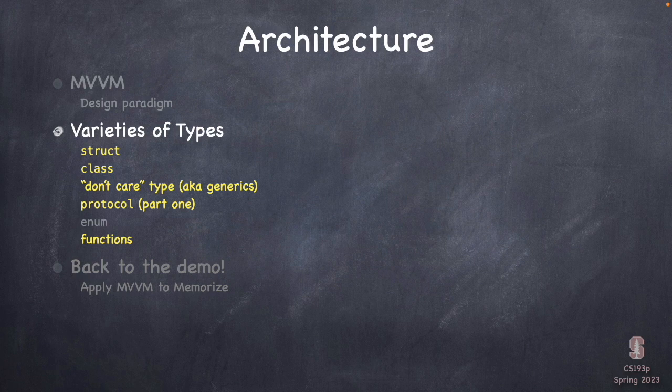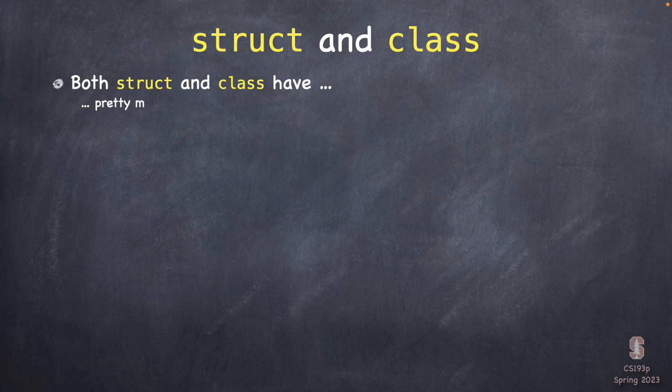I don't have time to talk about all the types since I want to do some demo today. So I'm going to cover structs and classes, 'don't care' types (generics), and then protocols part one. I'll talk more about protocols in lecture five or so. I'm going to skip enums for now — they are important, but I need to cover functions as types as well.